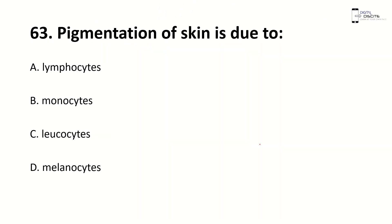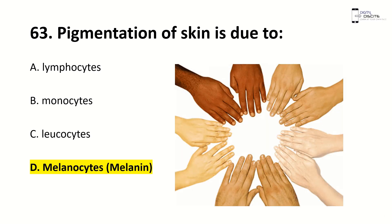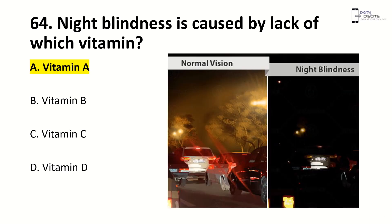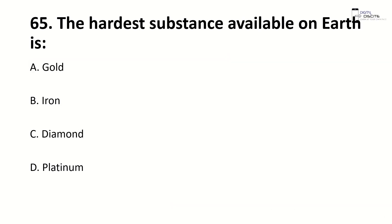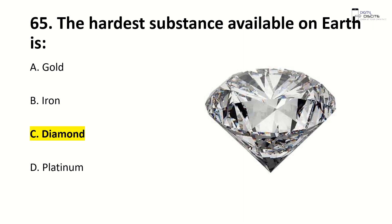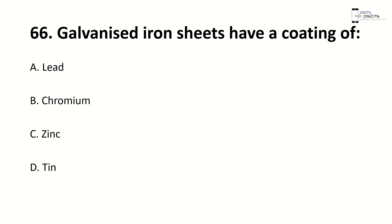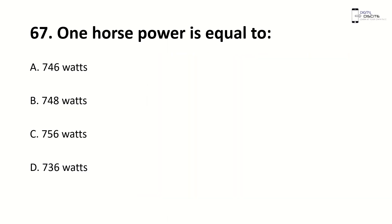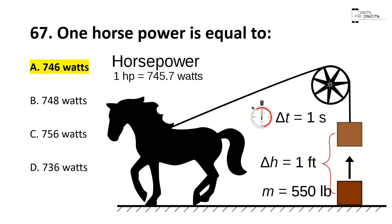Pigmentation of the skin is due to — right answer is D, melanocyte and melanin. Night blindness is caused by lack of which vitamin? Right answer is A, vitamin A. The hardest substance available is — right answer is C, diamond. Galvanized iron sheets have a coating of — right answer is C, zinc. One horsepower is equal to — right answer is A, 746 watts.